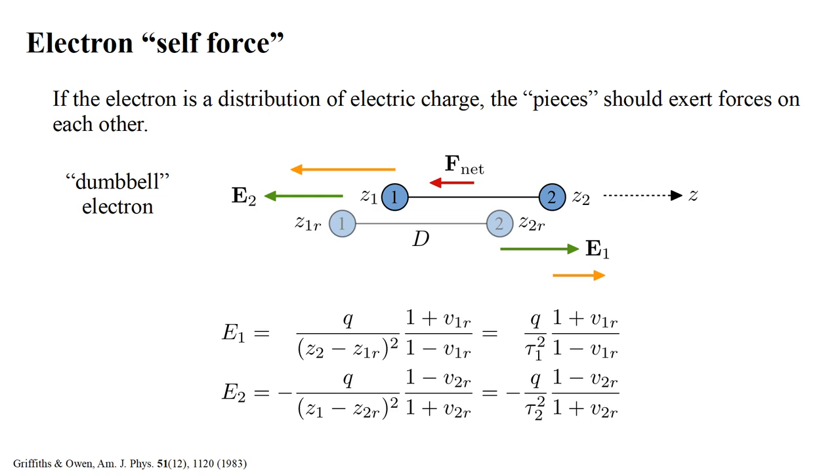If we use units in which the speed of light is one, then a distance such as Z-two minus Z-one R equals the time it takes light to travel that distance, call it tau-one. So we replace the distances squared in the denominators with time squared, tau-one squared and tau-two squared.